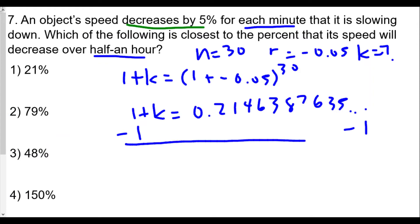So we end up getting k equals negative 0.7853612361. To change to a percent, we do a decimal slide of two places. Looking at the 3, we're not going to round up, so k equals negative 78.5 percent.